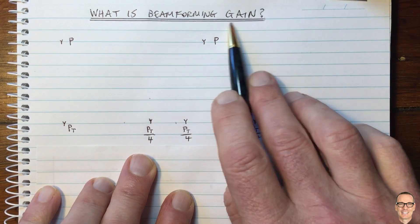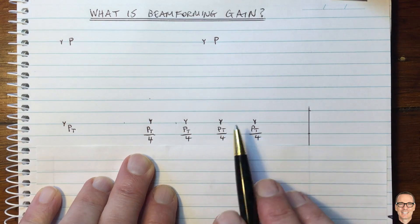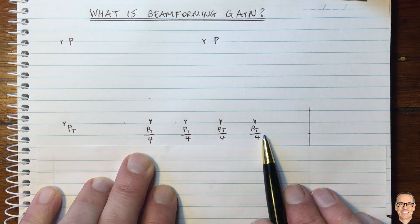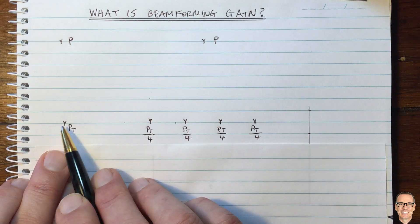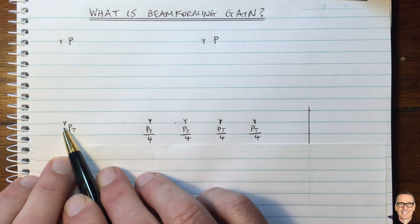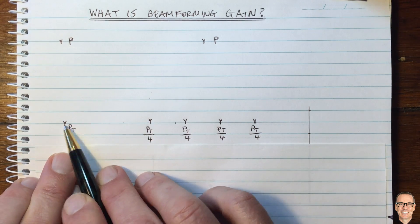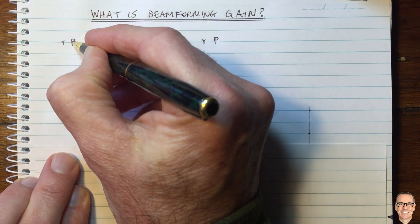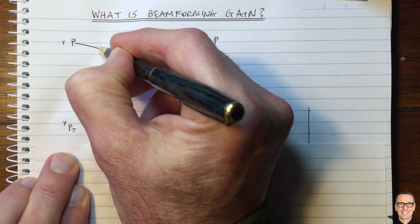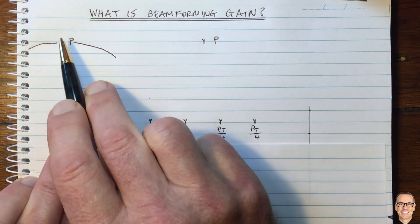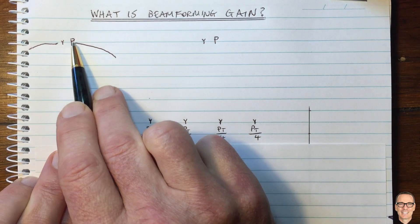So where's the gain? Well, we need to think about the actual waveforms that are being transmitted. Let's think again about this single antenna case. Because this is an omnidirectional antenna, we could take our receive antenna and move it anywhere around this circle and still receive the power P.